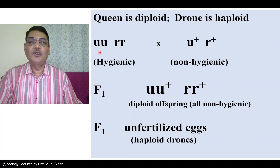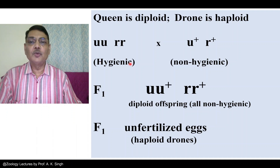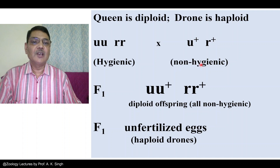There is a queen which is diploid, having genotype UURR — this is a hygienic type of queen. She is mated with a male having genotype U-plus R-plus, which is a non-hygienic male.